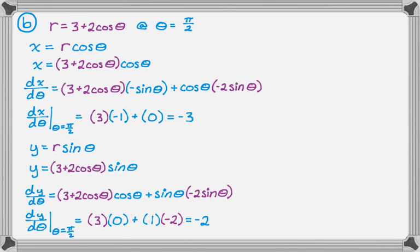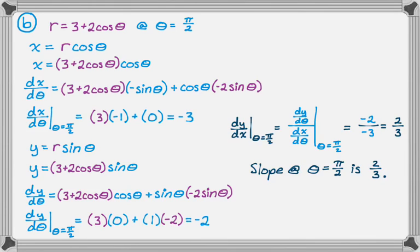So we're trying to find dy dx. So dy dx at theta equals pi over two is just dy d theta divided by dx d theta, both of which were evaluated at pi over two. And so we already found the values, so we just substitute in and we get negative two over negative three, or two-thirds. So the slope at theta equals pi over two is two-thirds.